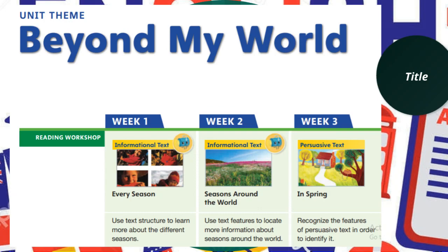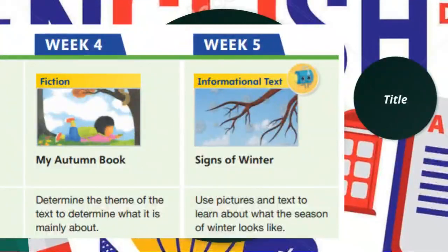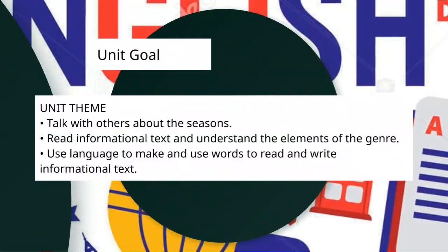In week three, we will recognize the features of persuasive text. In week four, we will read the fictional story My Autumn Book and determine the theme of the text to understand what it is mainly about. In week five, Signs of Winter, we will use pictures and text to learn about what the season of winter looks like. The unit goal is: we will talk with others about different seasons, read informational text and understand the elements of the genre, and use language to read and write informational text.